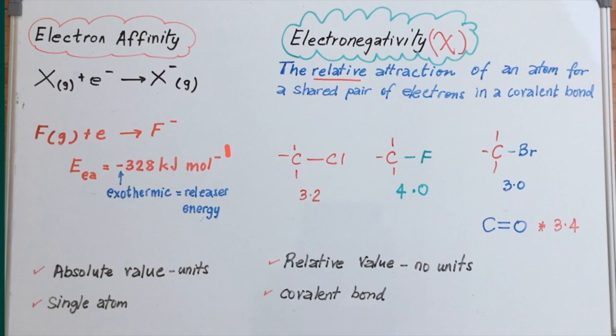or bromine with 3.0. So electronegativity does not have any absolute units, it's got relative units, and it's based on the attraction of electrons by a particular species. Here it's fluorine, here it's chlorine, and here it's bromine, and here it's oxygen, in a covalent bond.